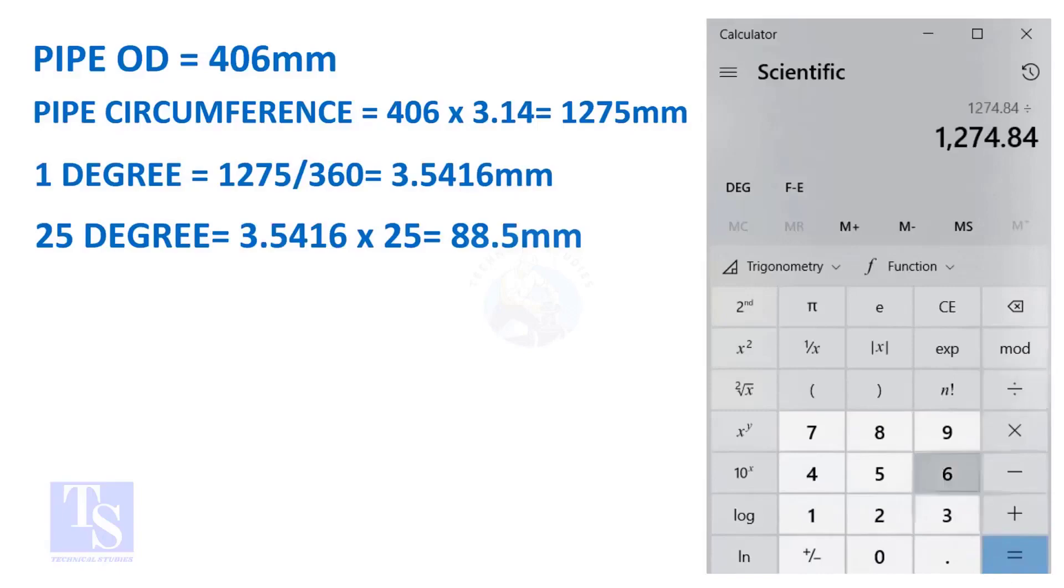And finally, multiply the 1 degree arc length by 25. Now you have the arc length of 25 degrees. You can apply this formula to get the arc length of any degree.